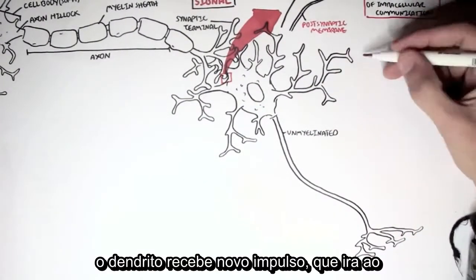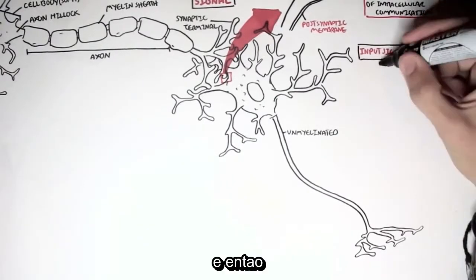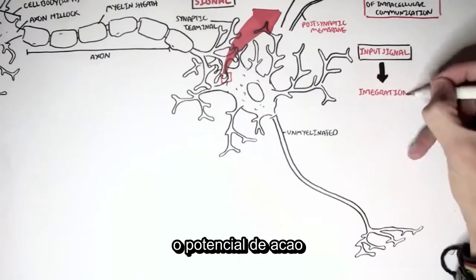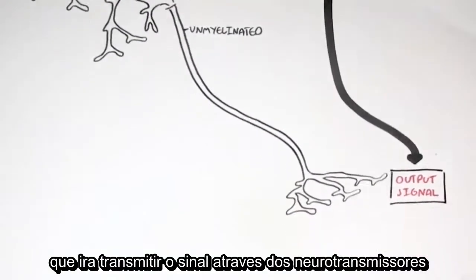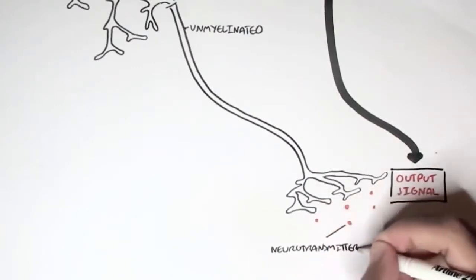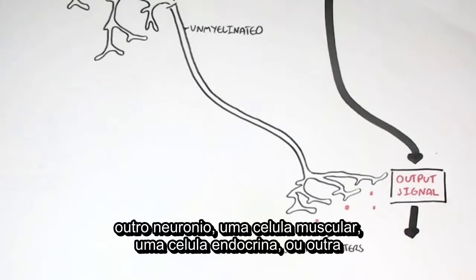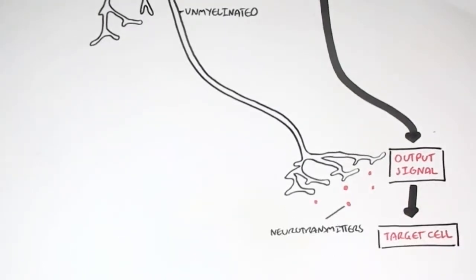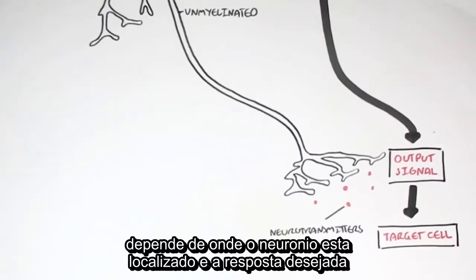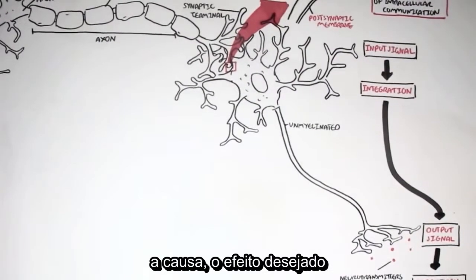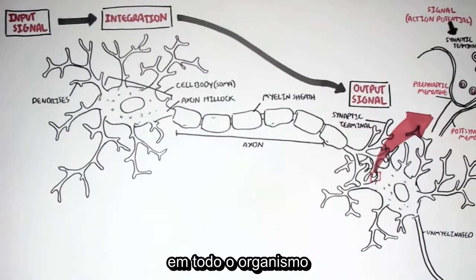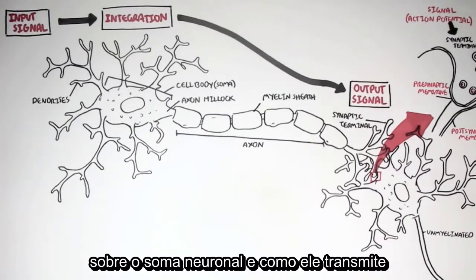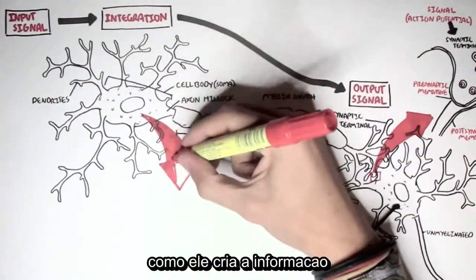A new input signal is received by the dendrites, integrated in the soma, and then the action potential passes along the axon towards the terminal and is passed on as an output signal via neurotransmitters that will target a particular cell. It can be a neuron again, or it can be a muscle cell or an endocrine cell — any kind of cell, depending on where the neuron is located and what desired response or effect it wants to cause.